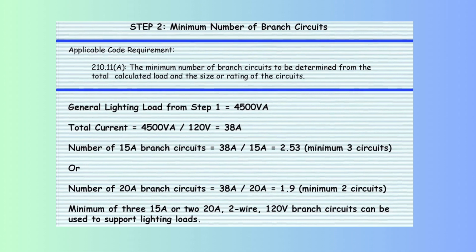For 20-ampere circuits: total current = 4,500 VA ÷ 120 V = 37.5 amperes; number of circuits = 37.5 ÷ 20 = 1.875, rounded up to 2 circuits. Key considerations: always round up to ensure the load is adequately supported. The 2023 NEC introduces provisions for 10-ampere branch circuits; however, these are typically reserved for specific applications such as lighting outlets and exhaust fans, and are not commonly used for general lighting loads. Ensure all branch circuits comply with NEC requirements for overcurrent protection, conductor sizing, and permissible loads.